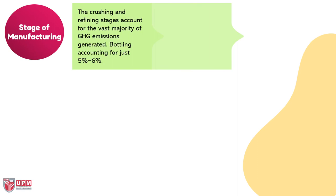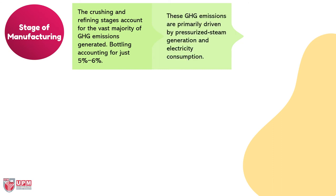Climate change impacts also occur at the manufacturing stage. The crushing and refining stages account for the vast majority of greenhouse gas emissions, with bottling accounting for just five to six percent. These greenhouse gas emissions are primarily driven by steam generation and electricity consumption.